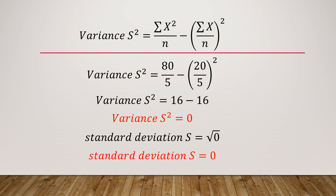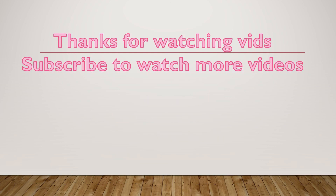Hence it is proved: if no variability exists among the observations of a data set, the variance and standard deviation will both be zero. This is property number one. In the next video, inshallah, we will discuss the other properties of variance and standard deviation. Thank you very much, thanks for watching. Assalamu alaikum.